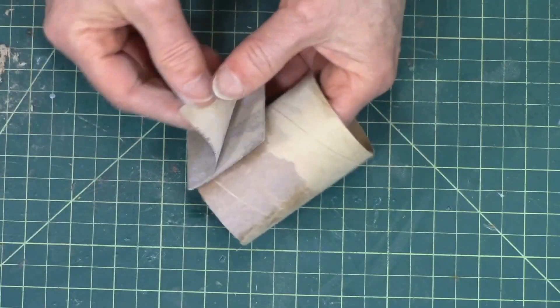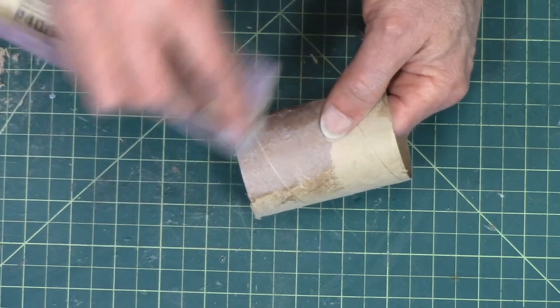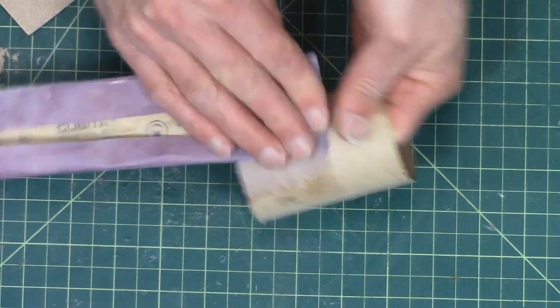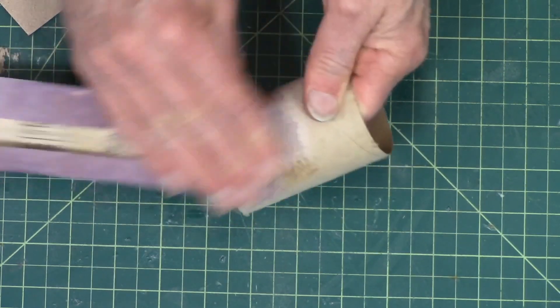So this is 150 grit sandpaper, and then I would switch to a finer grit sandpaper, this is 400 grit, and just continue to sand until you get to the level of smoothness that you need.